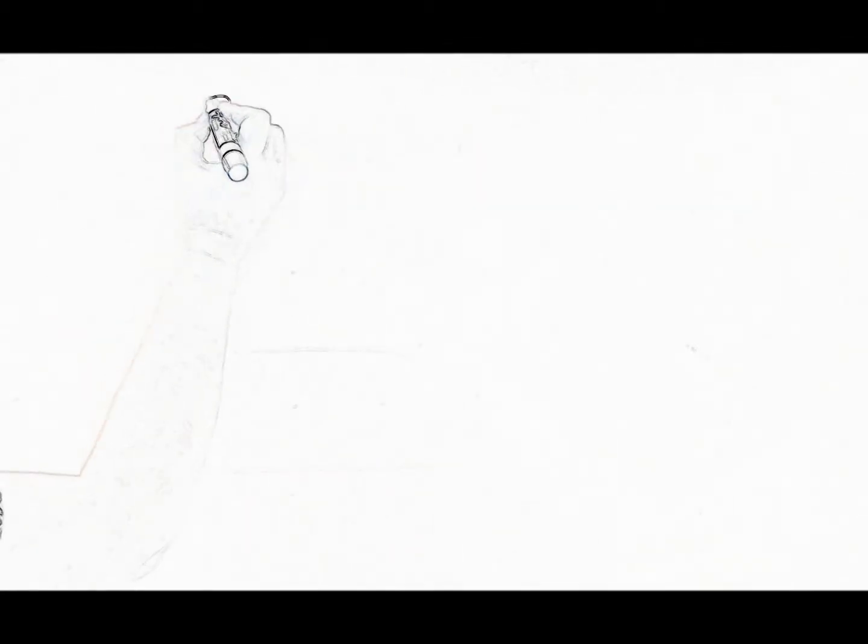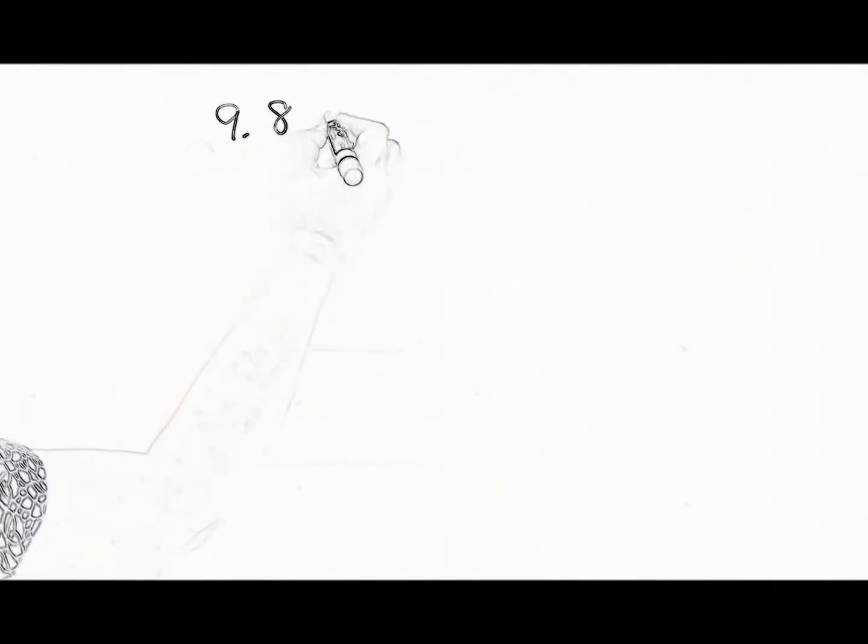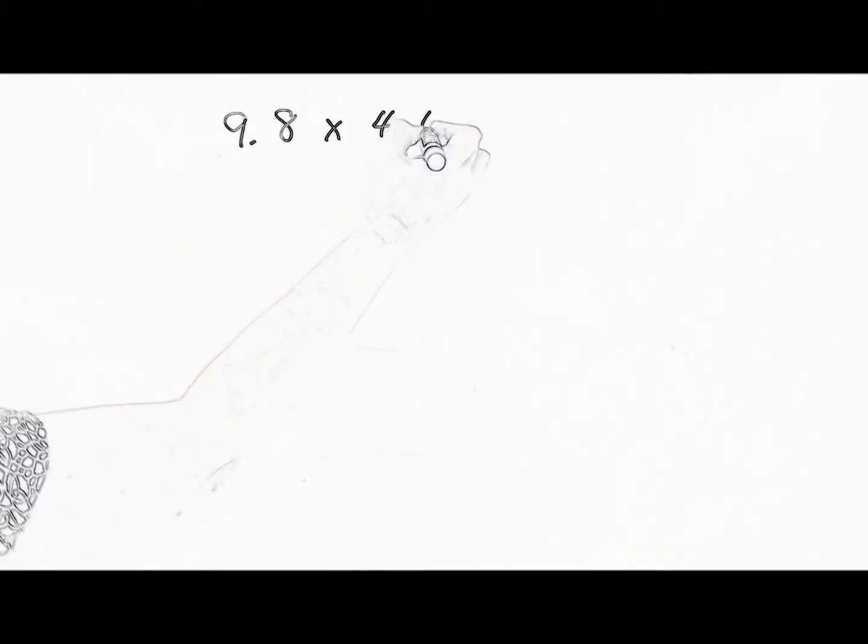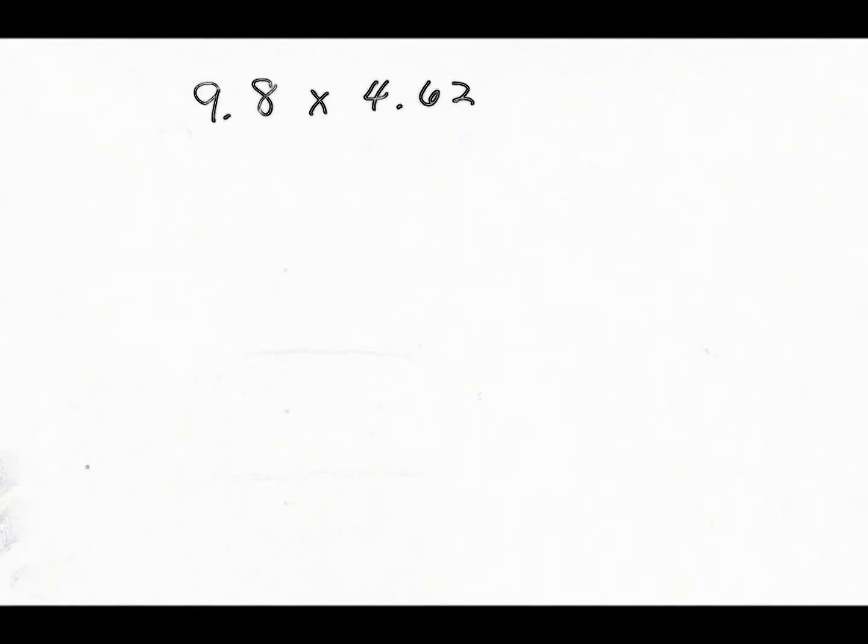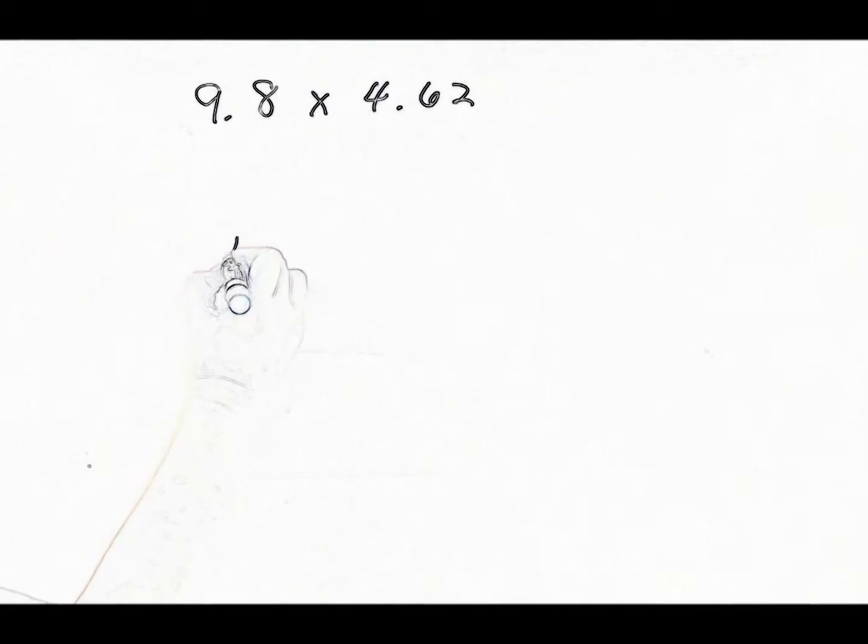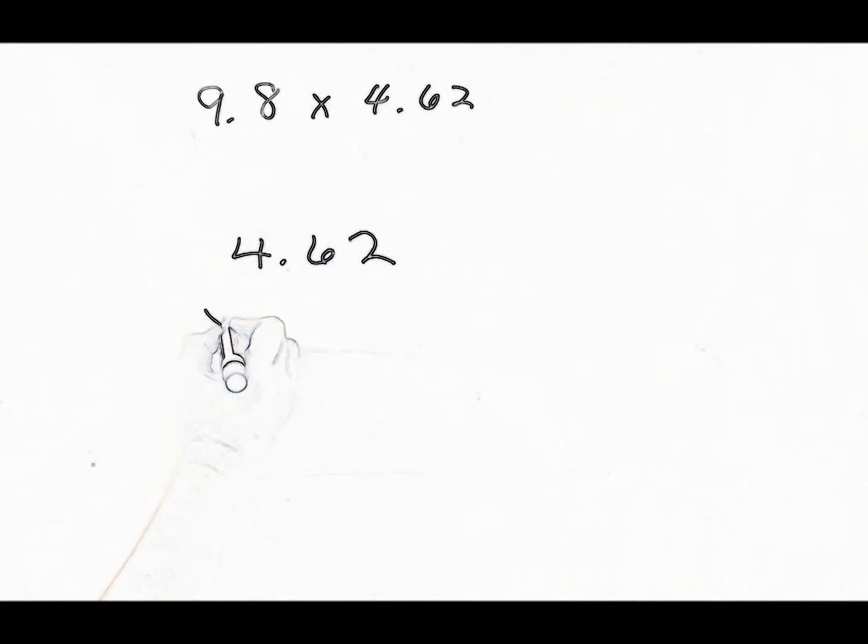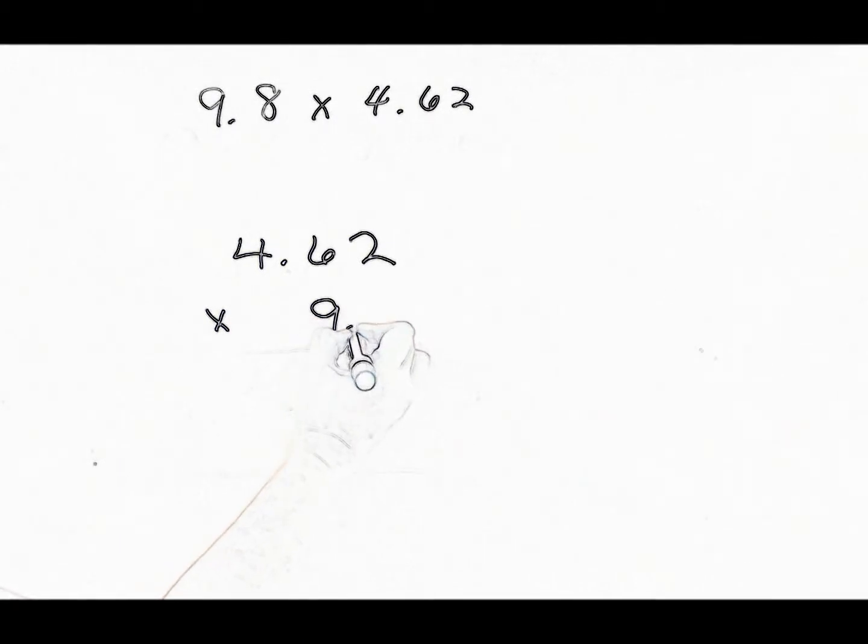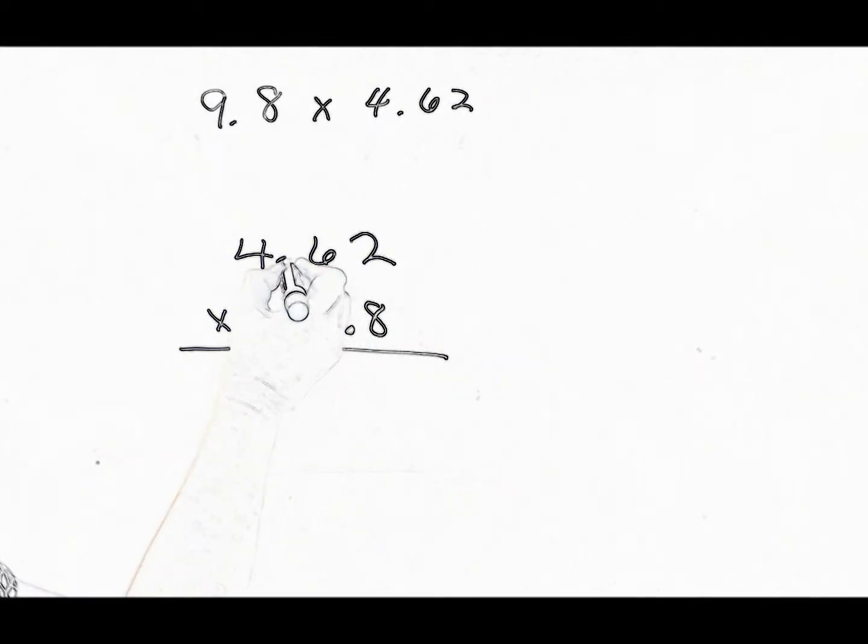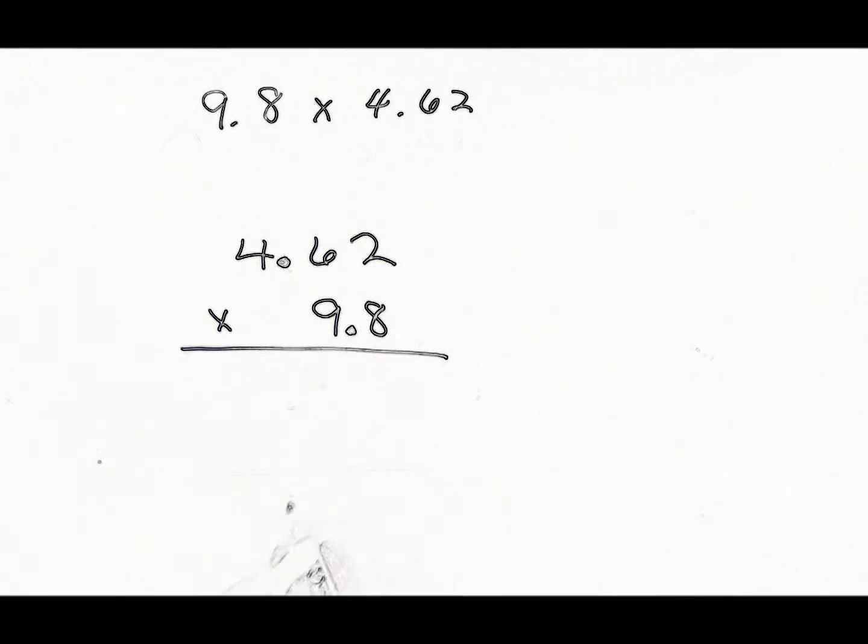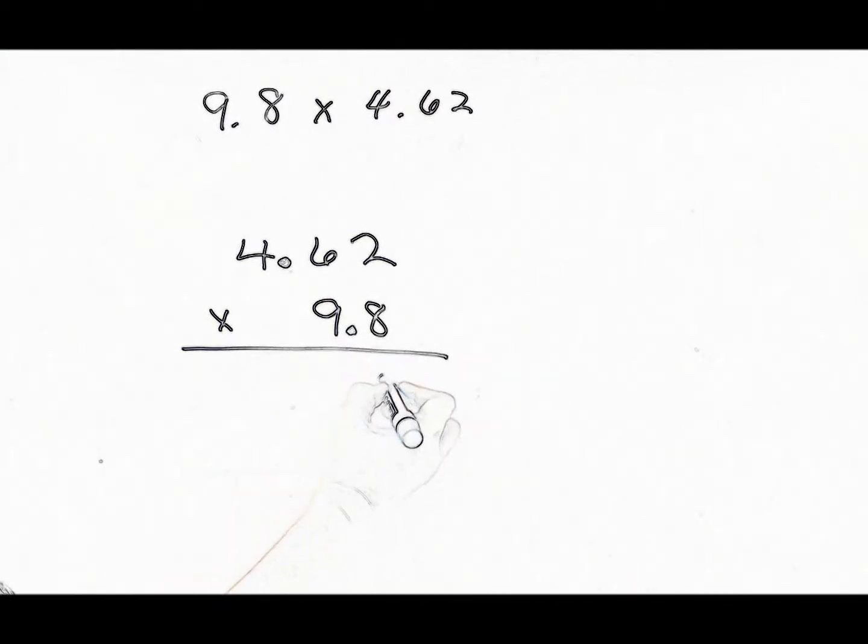Let's say that you have 9.8 times 4.62. This number has the most digits. So, let's put it on top. We'll put the other one underneath. When you multiply, you don't line up the decimals. You don't have to worry about that. Now, we're just going to go ahead and multiply.